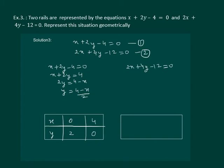Similarly we proceed with equation 2. We get 4y equal to 12 minus 2x, y equal to 12 minus 2x by 4.